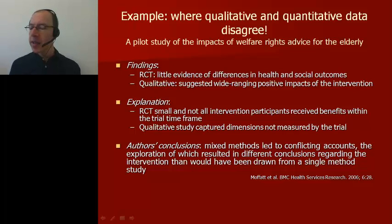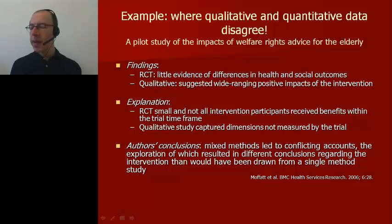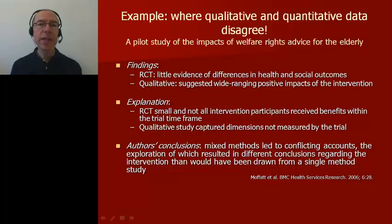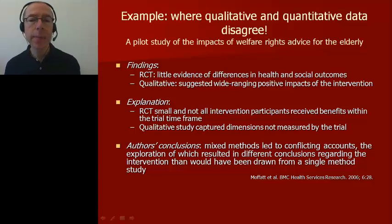Some quantitative measures of mental health did not capture all the dimensions of improvement reported by participants in the qualitative study. The researchers concluded that although this mixed method research produced apparently conflicting accounts, exploring the reasons for these differences led to richer conclusions than would have been drawn from a single study alone. Had they only conducted the trial, they would have concluded the intervention didn't work. By combining trial and qualitative evaluation, it became clearer that the intervention had important benefits — some of which could have been measured had the trial continued longer or included outcomes considered important by participants.